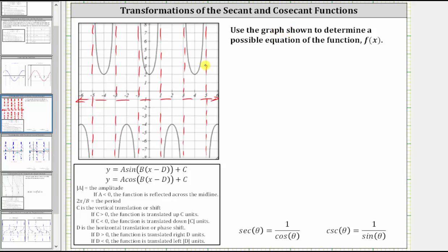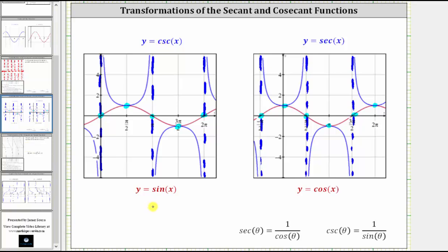Before we do this, let's review the relationships between cosecant and sine, as well as secant and cosine. Notice where cosecant has a vertical asymptote, the related sine function value is zero, or at the midline. Similarly, wherever secant has a vertical asymptote, the related cosine function value is zero or at the midline. The points of intersection of cosecant and sine occur where cosecant has a low point and sine has a high point, or when cosecant has a high point and sine has a low point. Similarly, the points of intersection of secant and cosine occur where secant has a low point and cosine has a high point, or when secant has a high point and cosine has a low point.